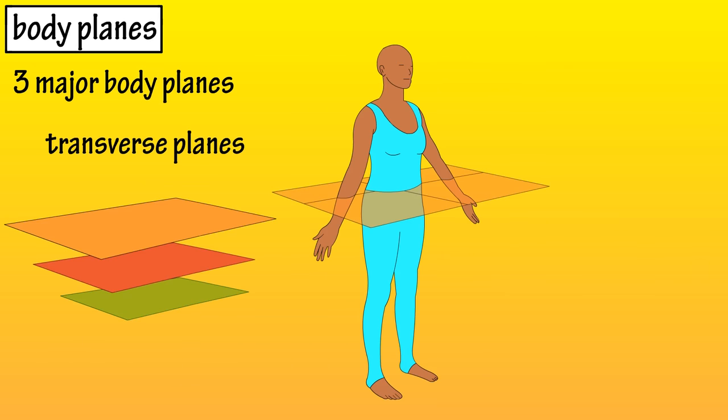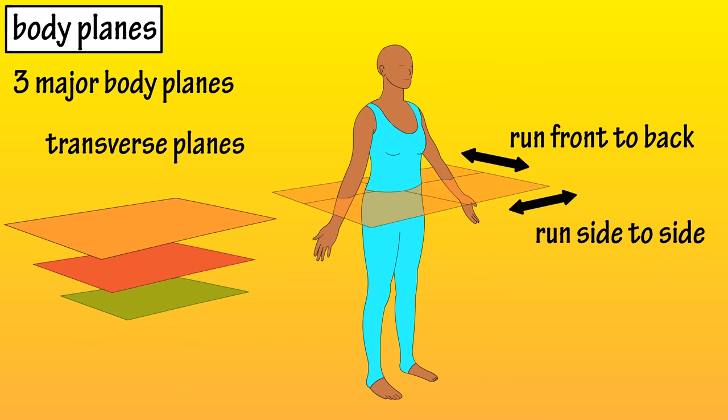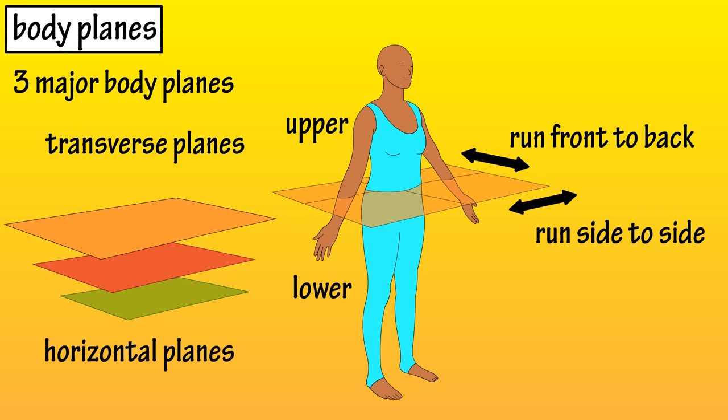Transverse planes run side to side and front to back. These planes divide the body into upper and lower sections. These planes are sometimes called horizontal planes.